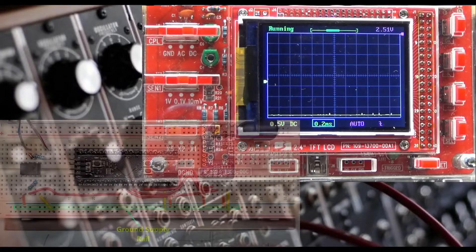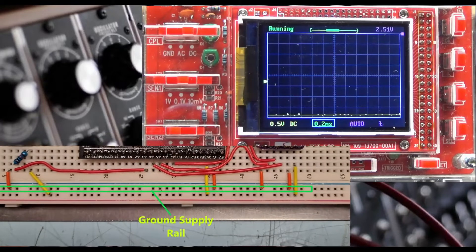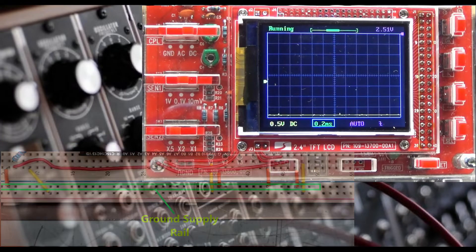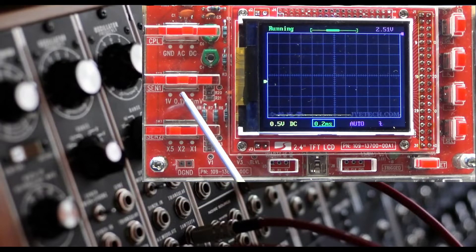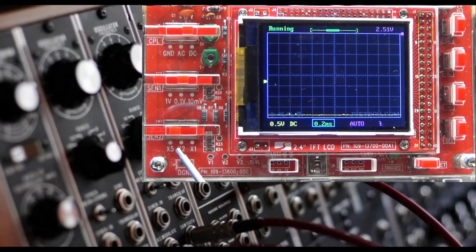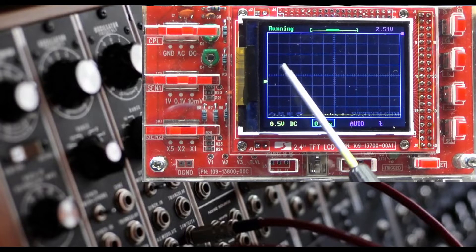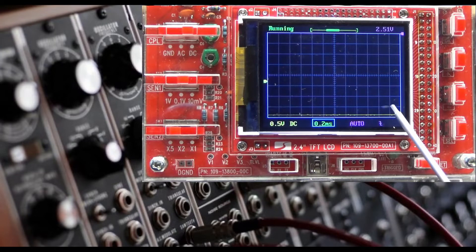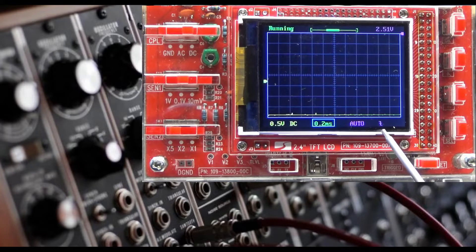The first thing I'm going to check is for ground and I have the red lead connected to the ground on the power rail and the black lead connected to ground on the power rail. With my settings set to DC on this switch, 0.1 volts on this switch, X5 on this switch. We are indicating 0.5 volts per division with a time base of 2 milliseconds per division set to auto.